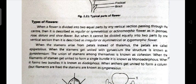When a flower cannot be divided equally into two parts by any one vertical section, it is described as an irregular, asymmetrical, or zygomorphic flower.